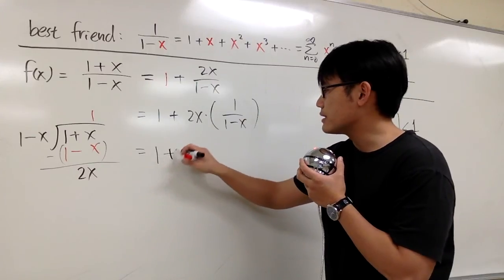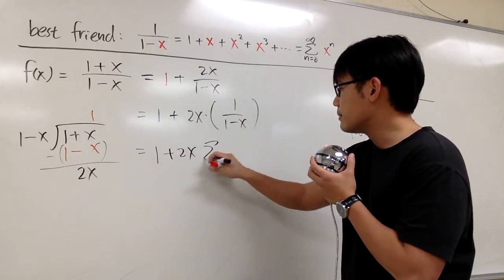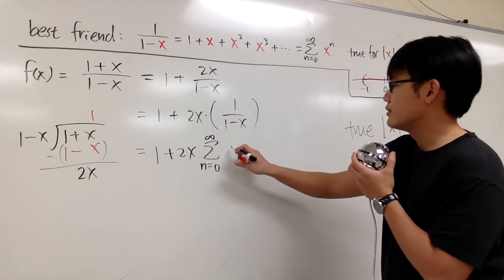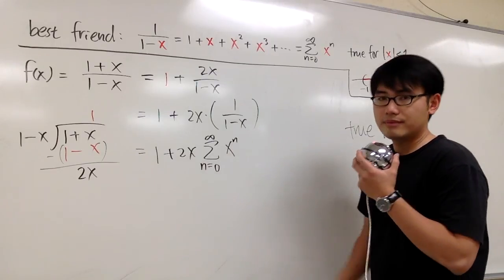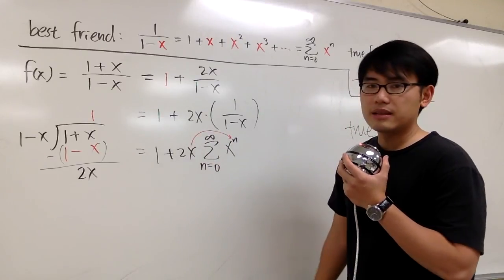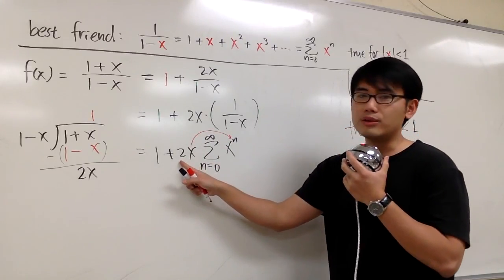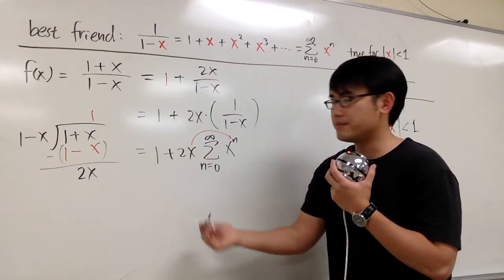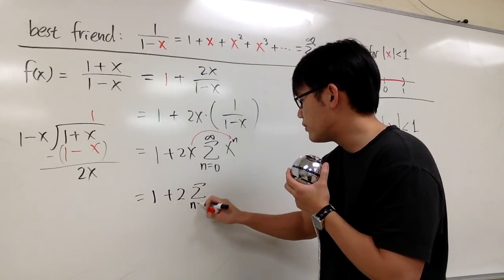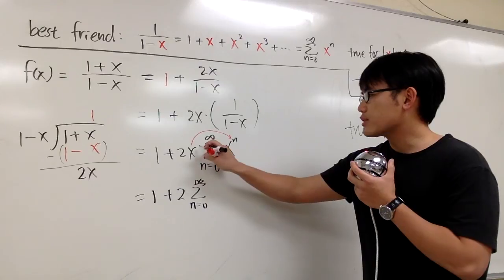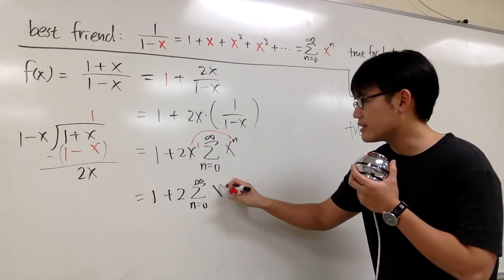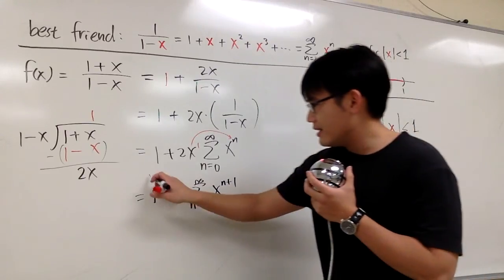So we have the 1 plus 2x right here, and then this is sigma when n goes from 0 to infinity — this is exactly the same as that — so x to the nth power. Then we have the x in front, so we can take the x and multiply it inside. They leave the 2 on the outside in the back of the book, so we'll leave the 2 on the outside as well. So this is 1 plus 2 times sigma when n goes from 0 to infinity of x to the 1st power times x to the nth power, which together gives x to the (n+1) power. And this is it.